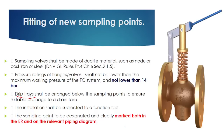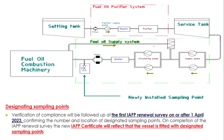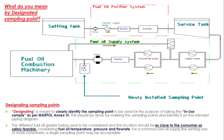The important thing is that the sampling point should be marked both in the engine room pipeline and also in the pipeline diagram. It means that where you have installed it — suppose you have installed it here — there should be a placard or label there indicating the MARPOL Delivered Sample point.